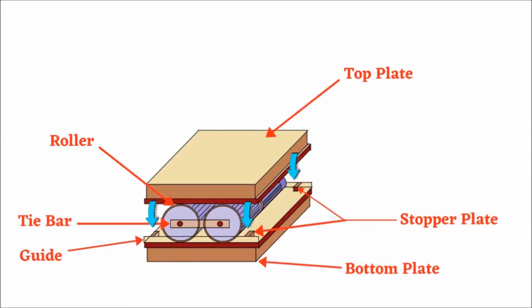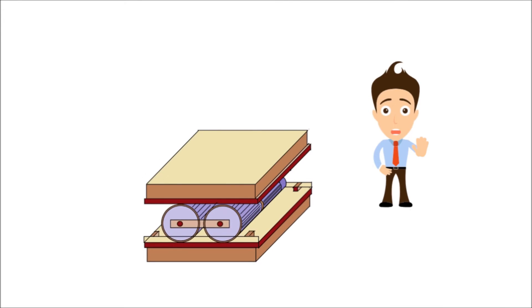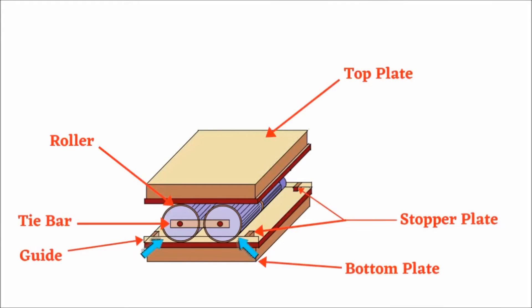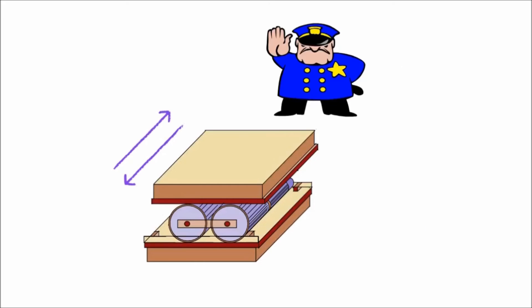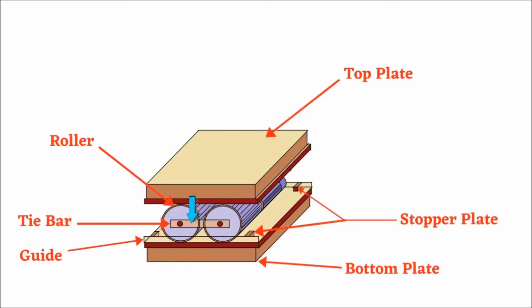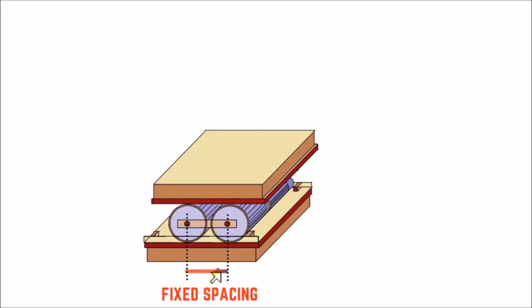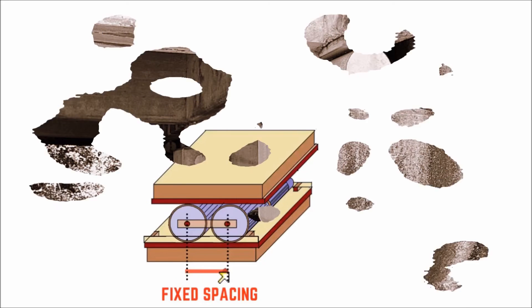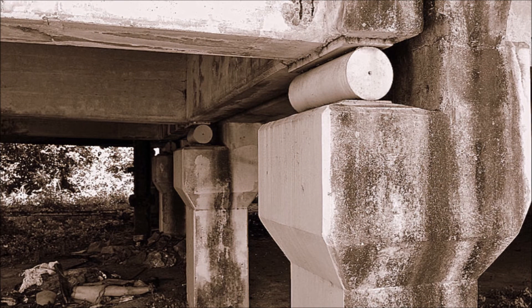These stopper plates prevent over-rolling of the rollers, and this guide prevents movements in transverse direction. This tie bar maintains the fixed spacing between the rollers during movement. There are different types of roller bearings available.